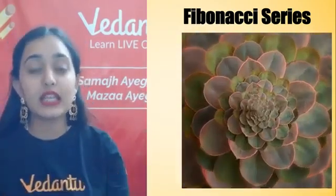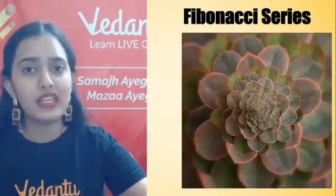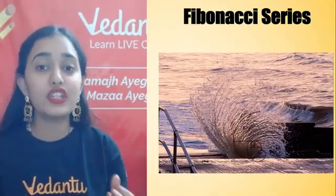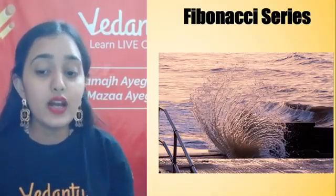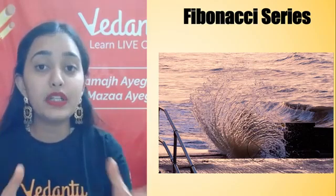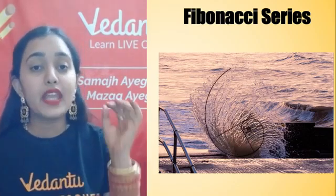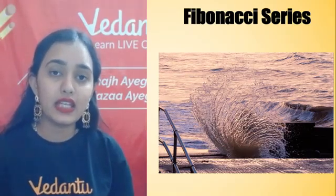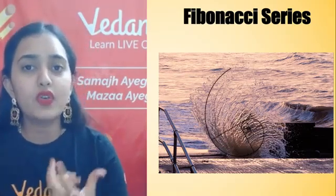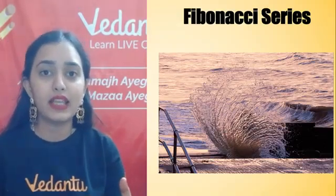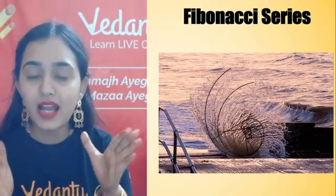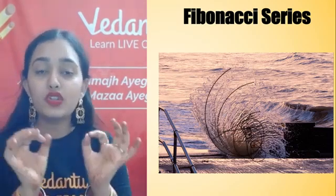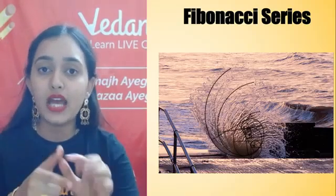Fibonacci series is also related to the golden ratio phi (φ). Phi — this golden ratio also tells us about the beauty of anything. Meaning, maths tells you about beauty. If you look at a good wave, it looks beautiful, it looks amazing. So you know, behind it you don't have dopamine hormone — you have maths! This golden ratio phi comes from the Fibonacci series, and this golden ratio is hidden in almost all things in the world.